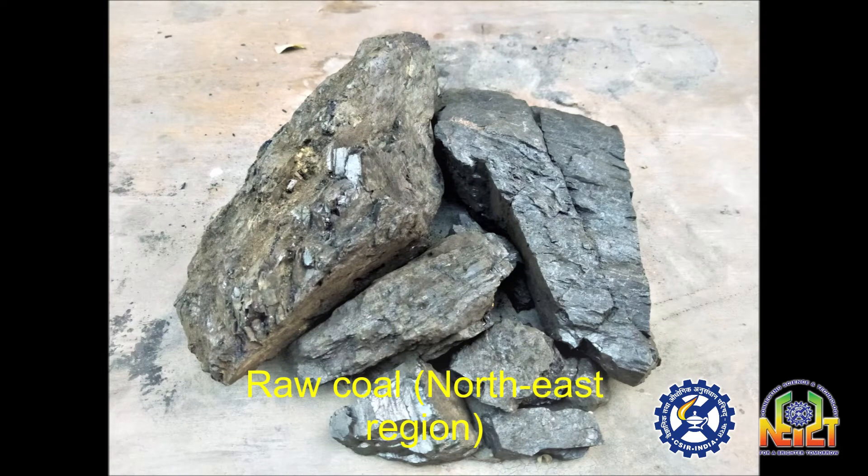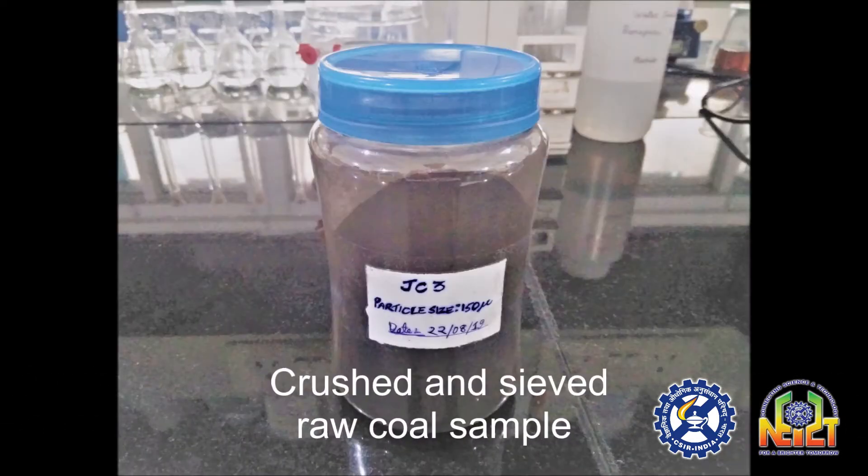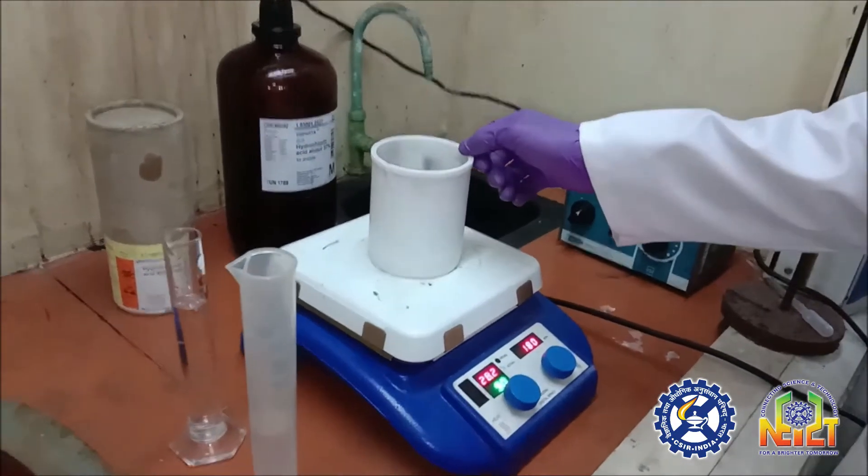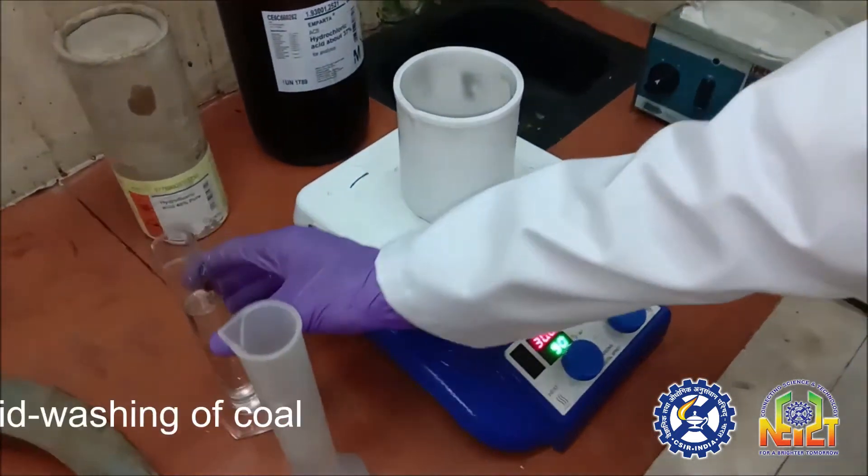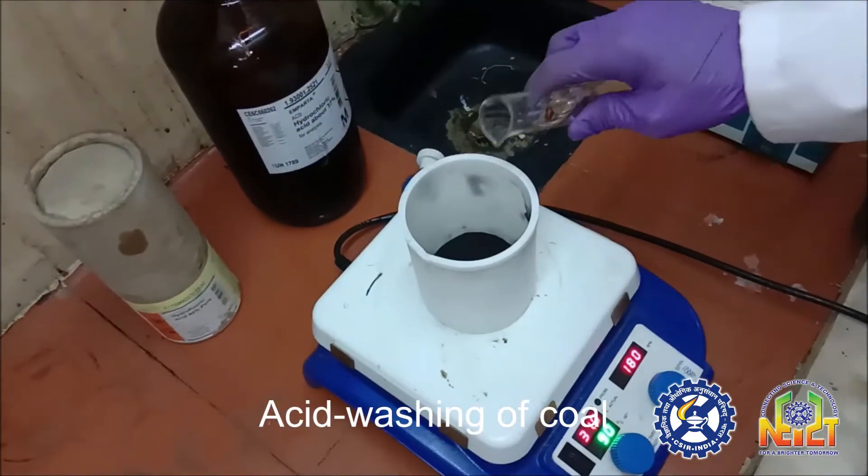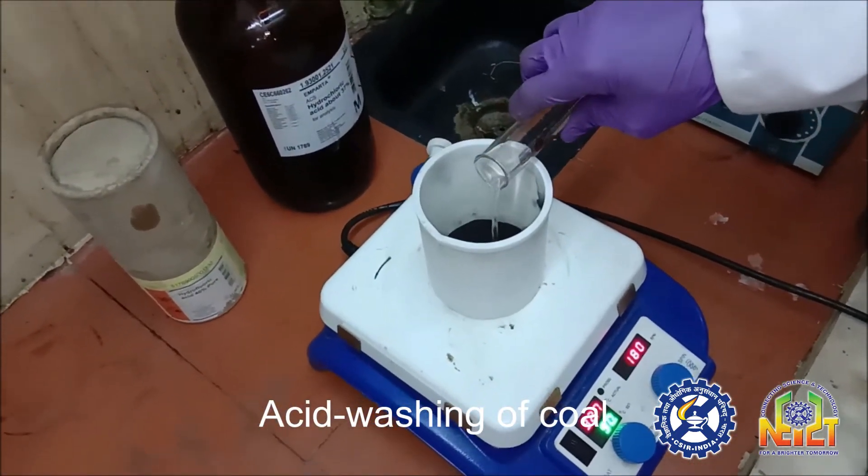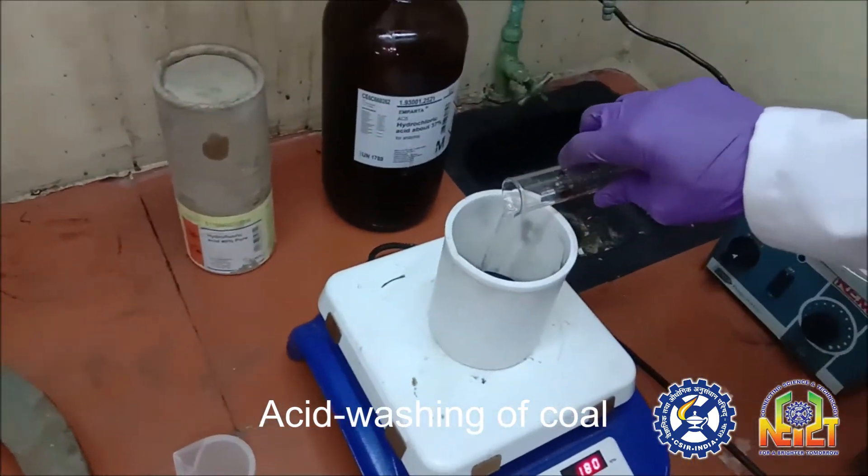the raw coal was first pre-treated in order to remove the inorganic ash content present in it. After crushing and sieving, the coal sample was treated with acid. This leaching process helps in the removal of unwanted ash present in the raw coal, which improved the quality of the washed coal sample.